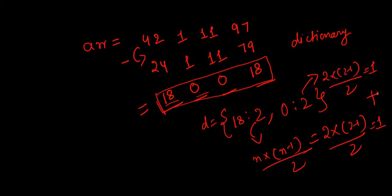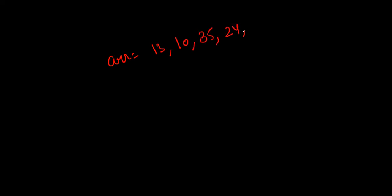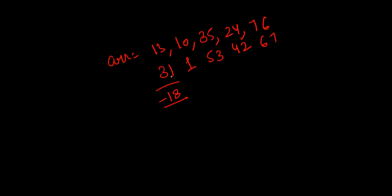Let me give one more example for clarity. Suppose the list is [13, 10, 35, 24, 76]. The reverses are 31, 1, 53, 42, and 67. The differences are: 13-31 = -18, 10-1 = 9, 35-53 = -18, 24-42 = -18, and 76-67 = 9. So the difference values are [-18, 9, -18, -18, 9].